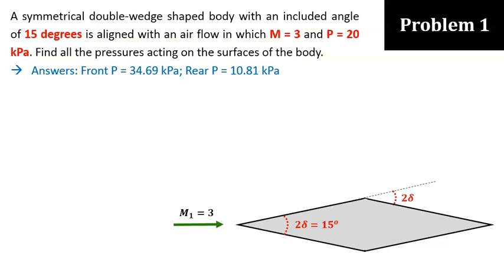In our first problem, we have a simple symmetrical wedge, a free stream Mach number of 3, with a pressure of 20 kilopascal. I won't go through detailed explanations on how to calculate the exact answers here. In this short video, it will be sufficient to draw the flow diagram and lay out a reasonable plan to solve the problem.